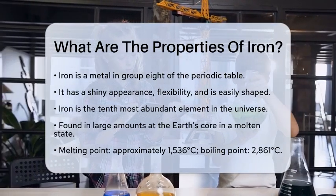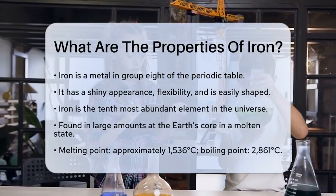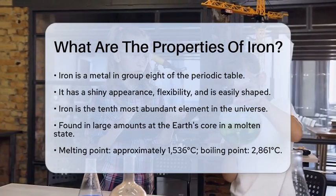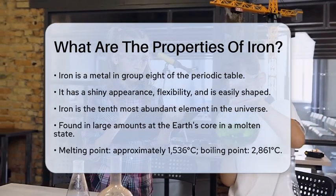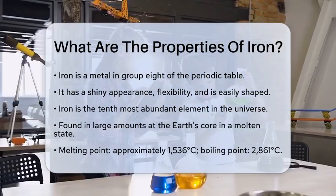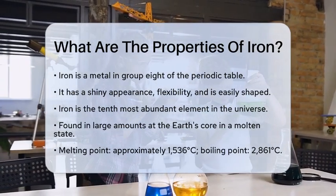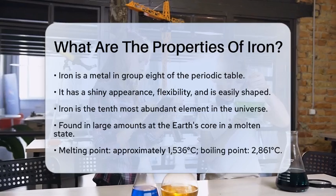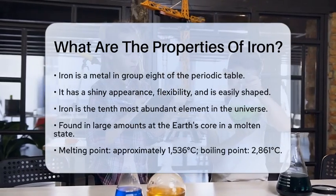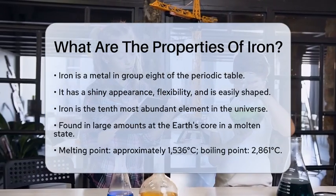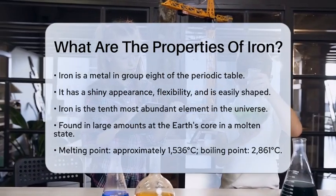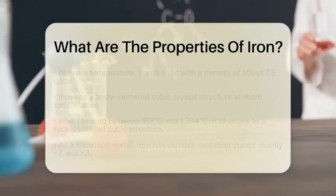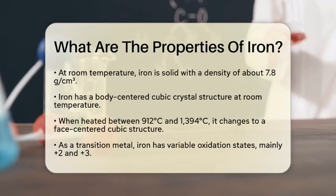When we talk about iron's physical properties, it has a melting point of about 1,536 degrees Celsius and a boiling point of 2,861 degrees Celsius. At room temperature, iron is solid and has a density of approximately 7.8 grams per cubic centimeter.